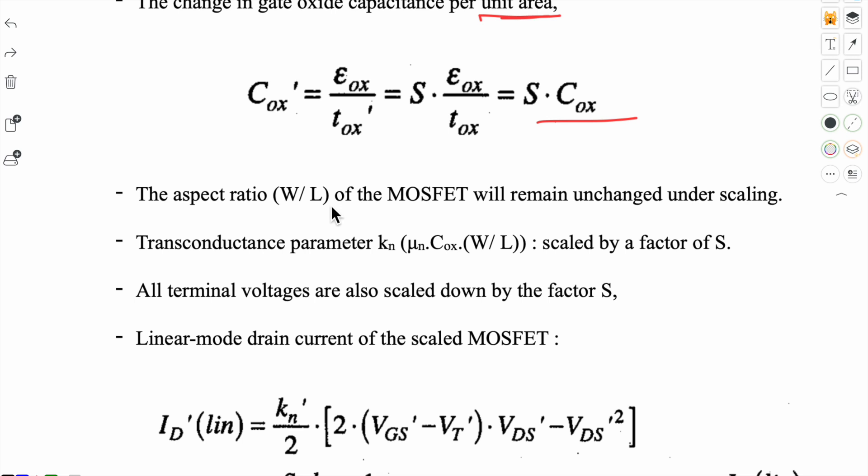The aspect ratio, width over length, we have seen that both are scaled down. This means it will remain unchanged under this constant field scaling. The kappa, which is also called transconductance parameter, is the product of mu_n, C_ox, W by L. The C_ox, our gate oxide capacitance per unit area, increased by scaling factor S, W by L remains unchanged, and we have considered that mobility is unaffected. That means the transconductance parameter, which we can denote as kappa dash, will be S times the previous one.